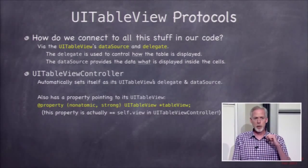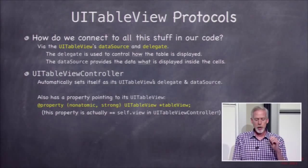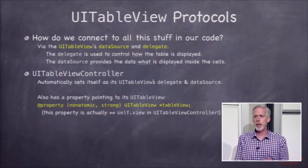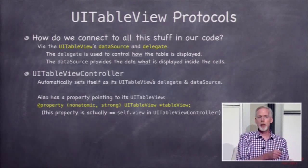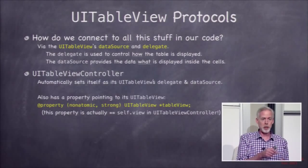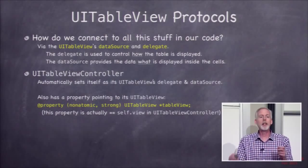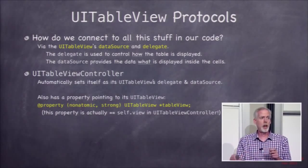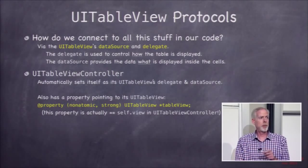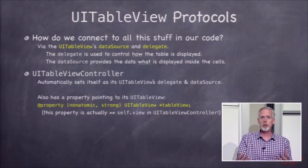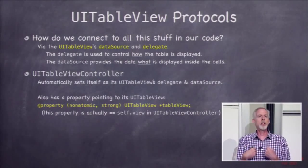The UITableViewController, just to be clear — I showed this a couple slides ago — it automatically wires itself up as the data source and delegate. If you were going to bring out a generic view controller and drag out a table view into it, you would have to control drag the data source and the delegate to your view controller yourself. You'd have to hook them up, or in code you could hook them up too. But UITableViewController automatically hooks it up.